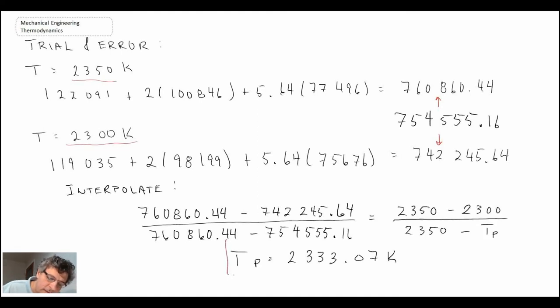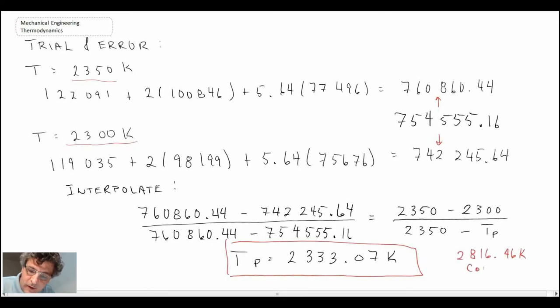And that's what we then get for the adiabatic flame temperature if we're dealing with a constant pressure system. Now when we compare back to the value that we had for constant volume, there we had 2816.46 kelvin. That was constant volume. So we can see that when we have constant pressure and we have expansion, we do not get to the same high temperature that we did with constant volume.